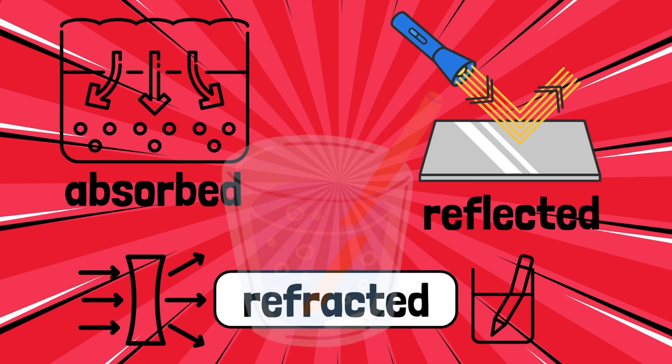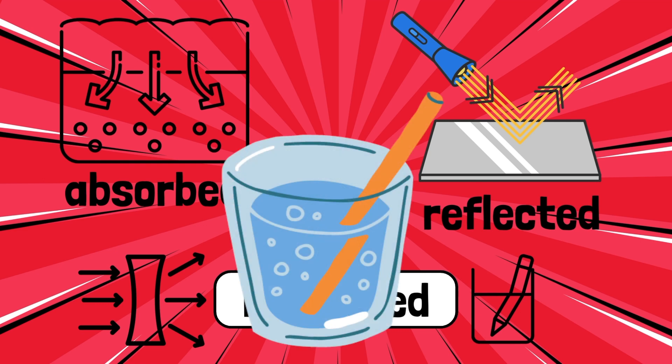Like when you look at a straw in a glass of water, at the water line it looks bent or broken because the light waves are passing through two mediums—the glass and the water—and each time they do that, they change direction a little bit.